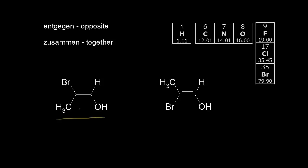We're going to use the EZ system. To use the EZ system, you need to think about atomic number to assign priority to the groups attached to your double bond.